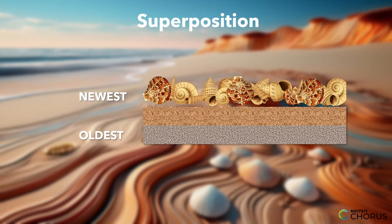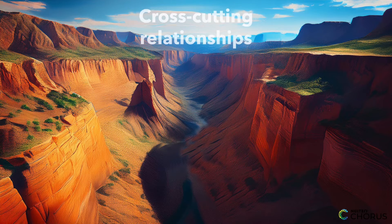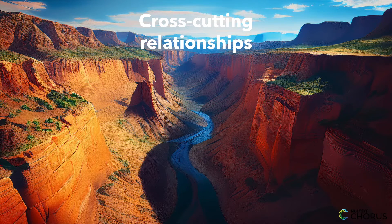Now, let's consider cross-cutting relationships. Picture a canyon with layers of rock. If a river cuts through these layers, we know that the river is younger than the rock layers it cuts through.